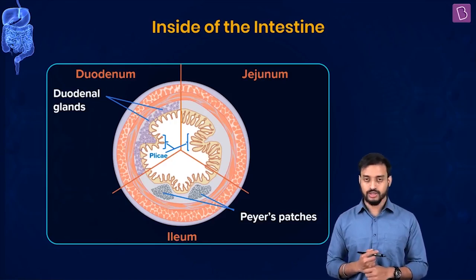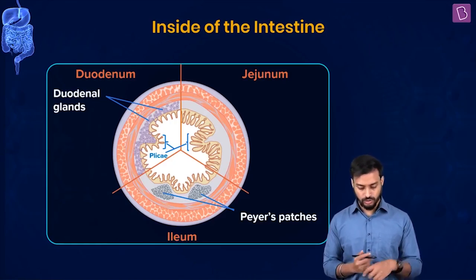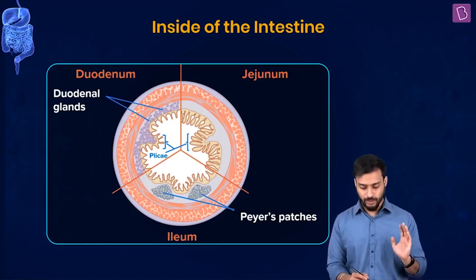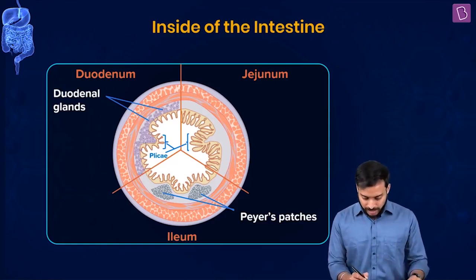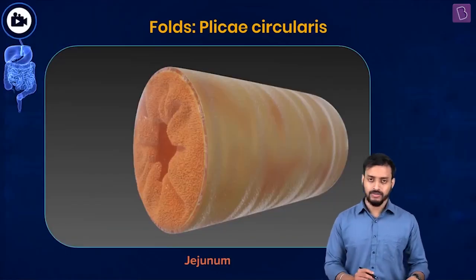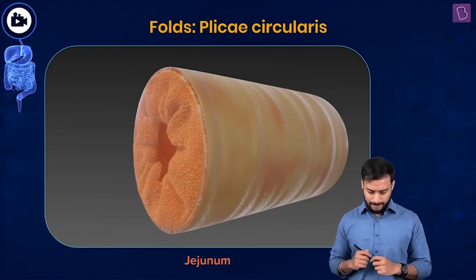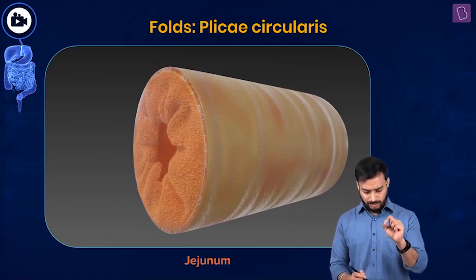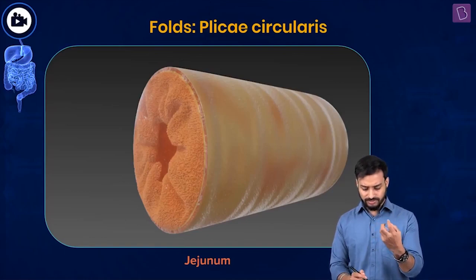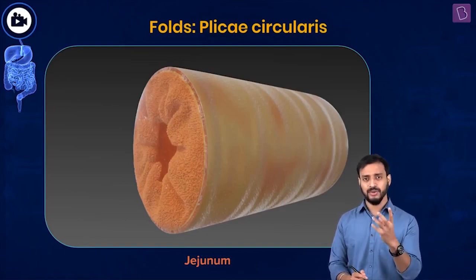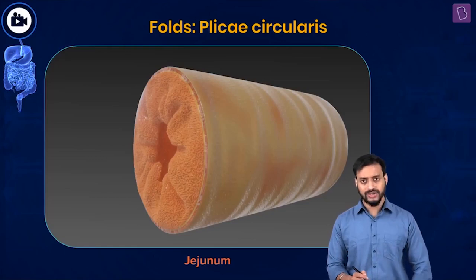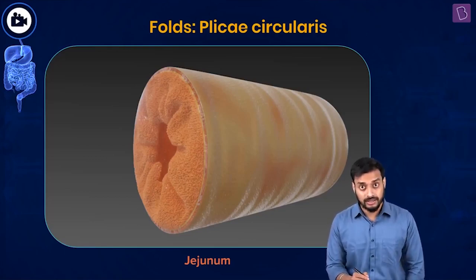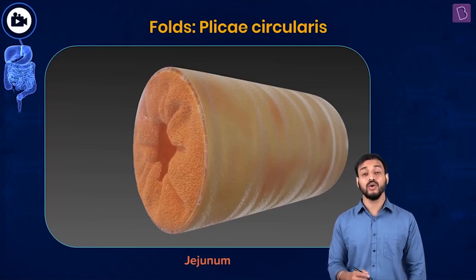Looking at the inside of the intestine, we can see the folds but also some other projections on the walls. What are they and why are they present?